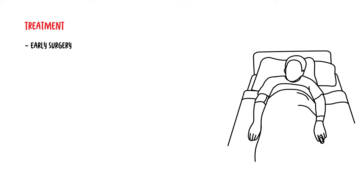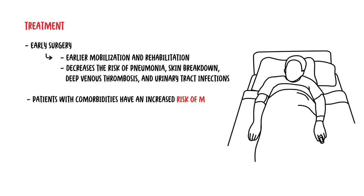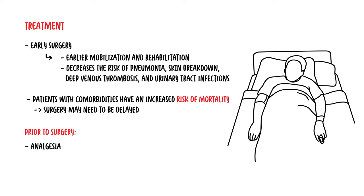Treatment of fractures is very important. Early surgery within 24 to 48 hours is prudent, as it allows early mobilization and rehabilitation, which speeds functional recovery and decreases the risk of complications such as pneumonia, skin breakdown, deep vein thrombosis, and urinary tract infections. Patients with comorbidities have an increased risk of mortality, so surgery may need to be delayed. Prior to surgery, appropriate analgesia is important, usually with a combination of a femoral nerve block and short-acting opioids. Whilst on opioids, it is important to check bowel motions.